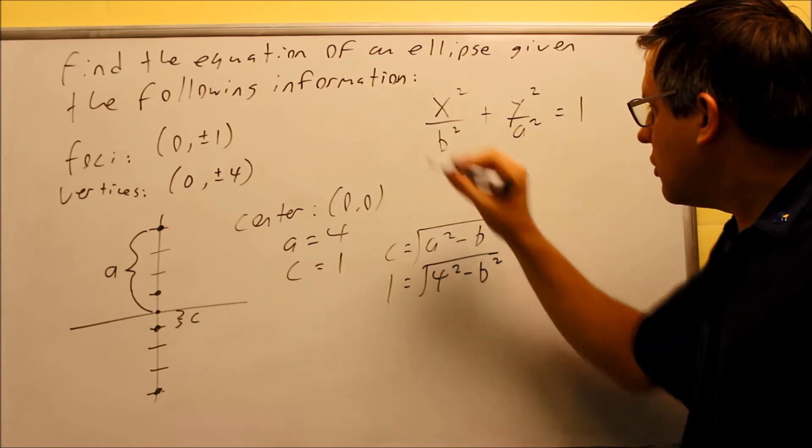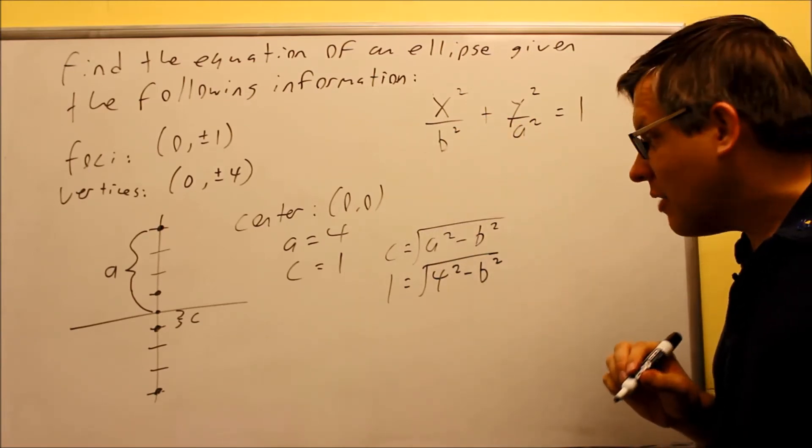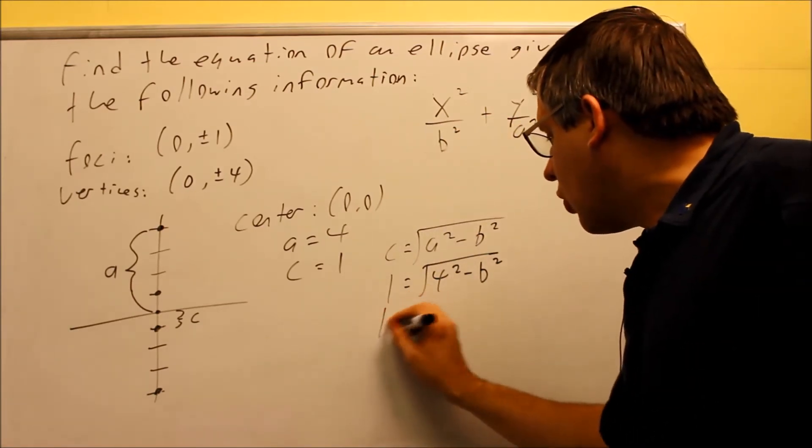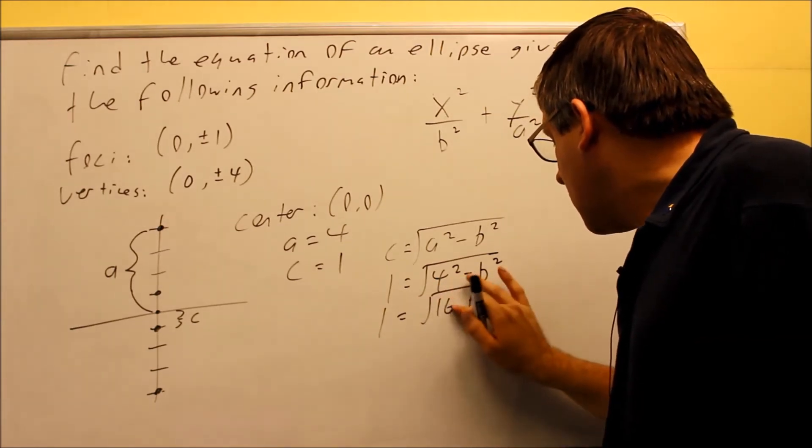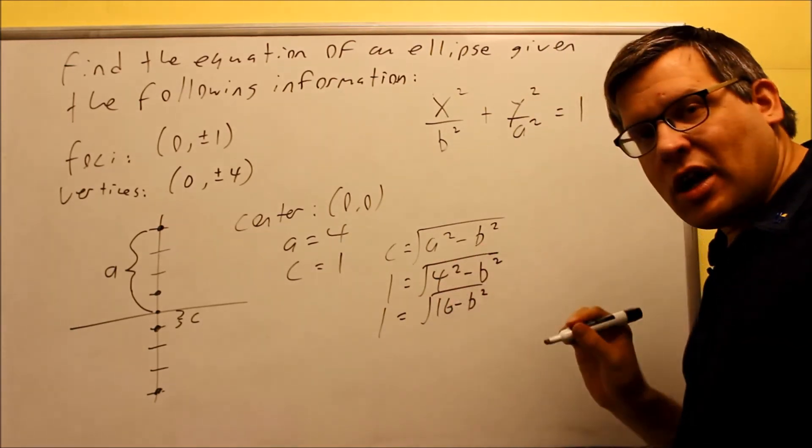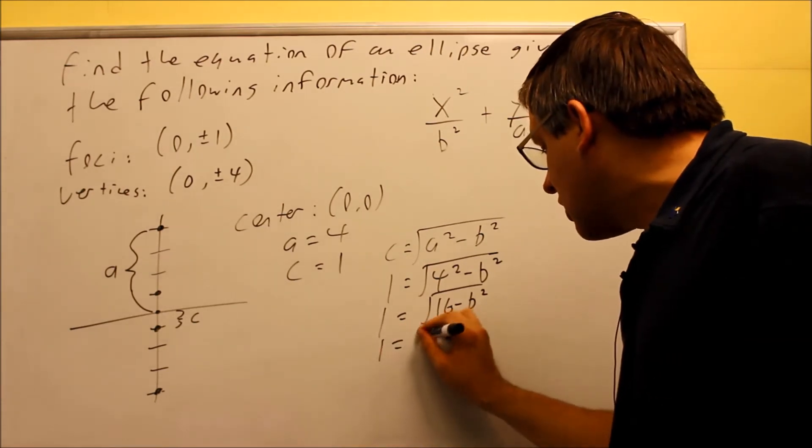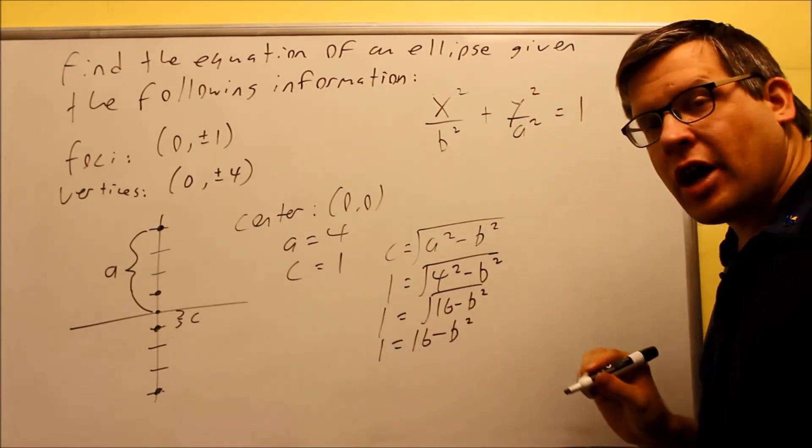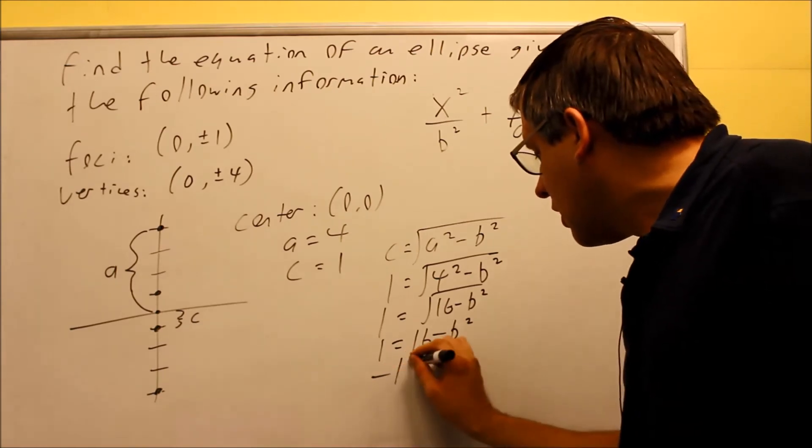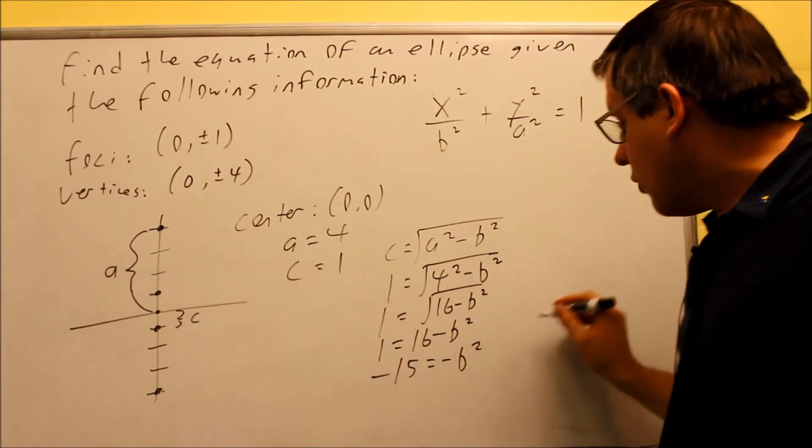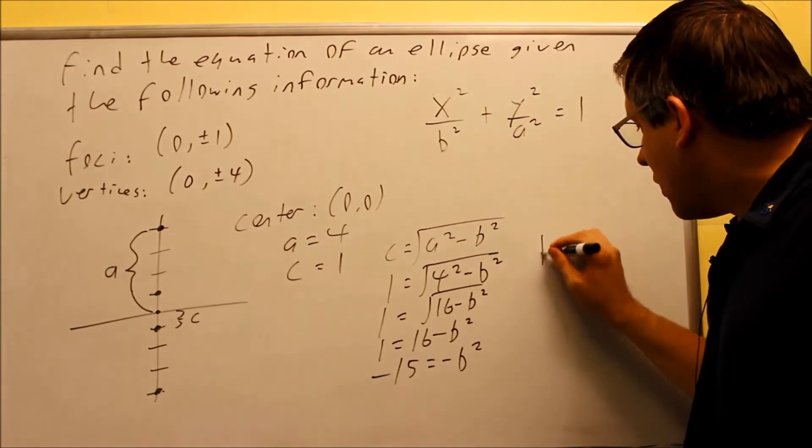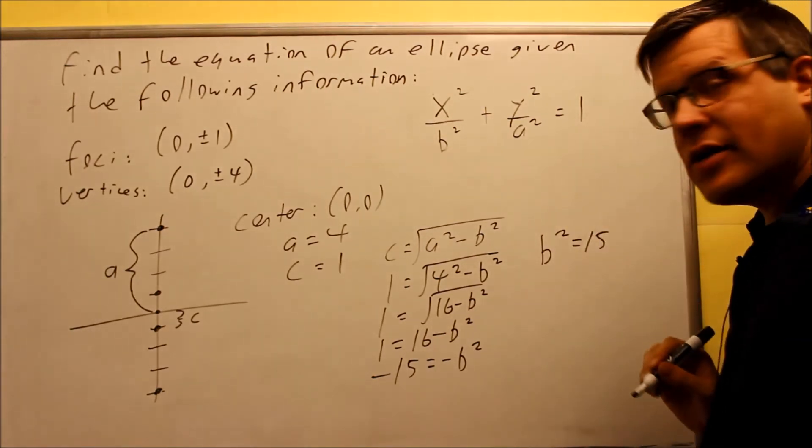So I just need to substitute the information in the formula and I'm going to use this to solve for b squared because b squared is actually the part of the formula I still need to find. So I have 1 equals the square root of 16 minus b squared and then I'm going to square both sides there so I get 1 equals 16 minus b squared and I subtract 16 from both sides. Negative 15 equals negative b squared or when I cancel out the negative I get b squared is equal to positive 15.